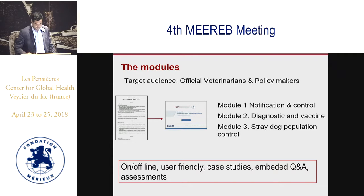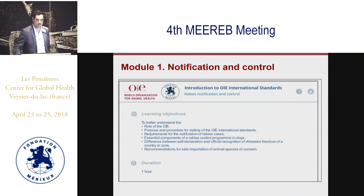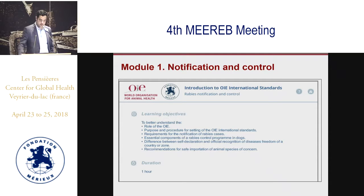At the end we want to check that knowledge actually went through, so there is an assessment. This is how the module looks — I will show a short screen recording. For Module 1, the first part establishes the learning objectives and duration. The module is on average around one hour, so in three hours you can go through all the international standards related to rabies. The learning objectives of Module 1 include understanding what the OIE is and its purpose.